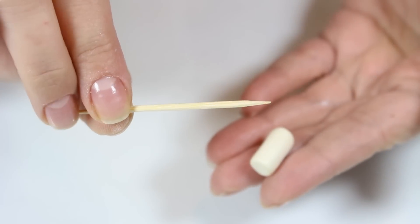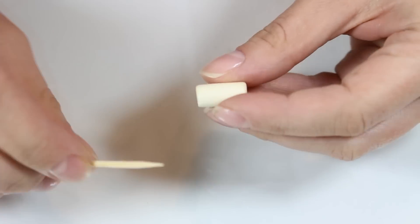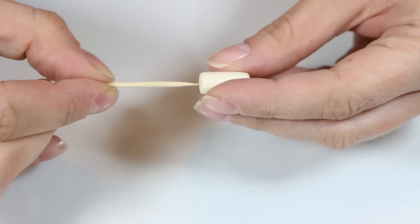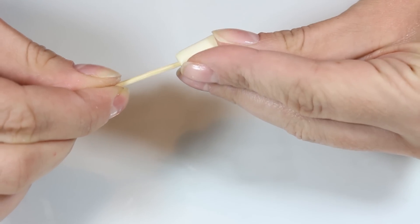Then you want to take a toothpick and stick it to the already prepared cylinder. The toothpick is going to help us while attaching corn kernels later.